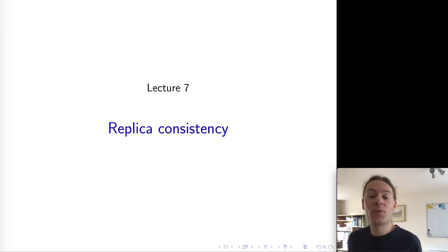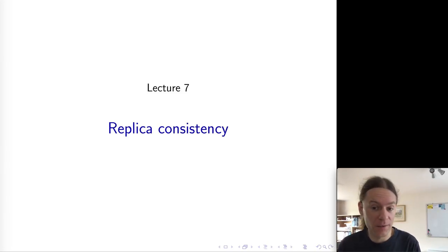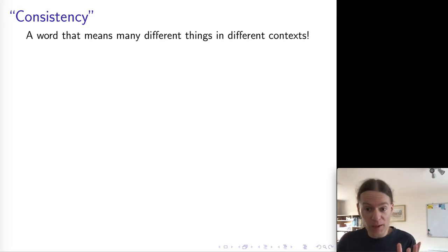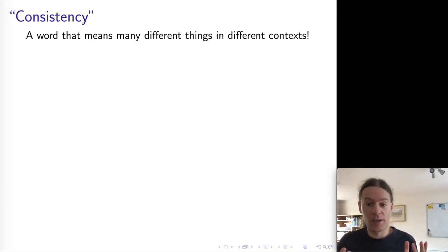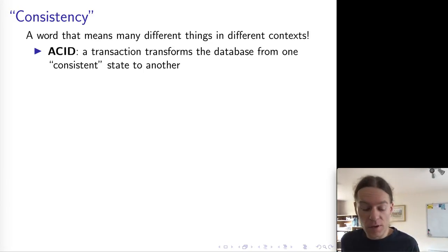Hello everyone and welcome to lecture 7 of Distributed Systems. Today we will be talking about consistency of replicas. Now consistency is a bit of a terrible word unfortunately because it means so many different things depending on who you're asking and which context you're talking about. Some of the contexts where you might have seen consistency is in the context of transactions.